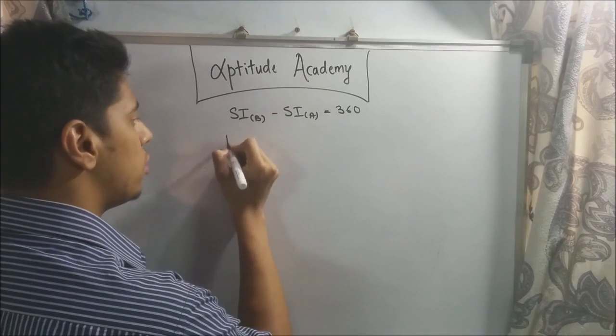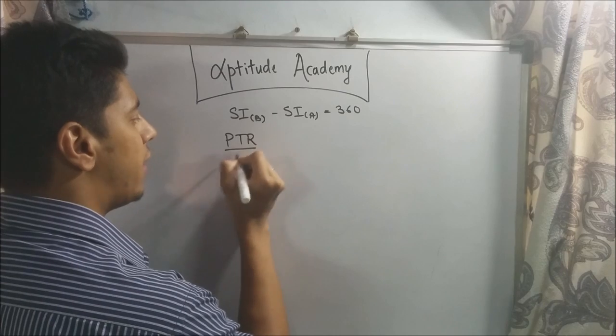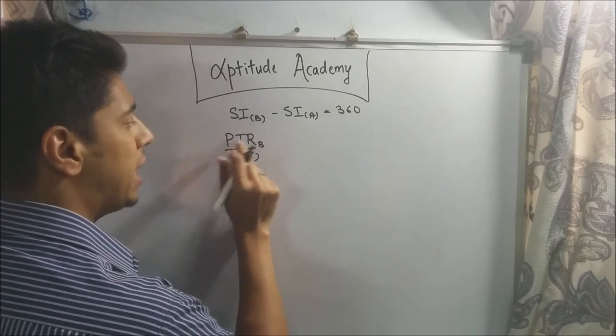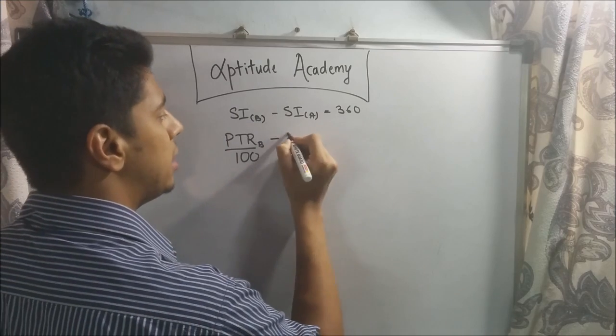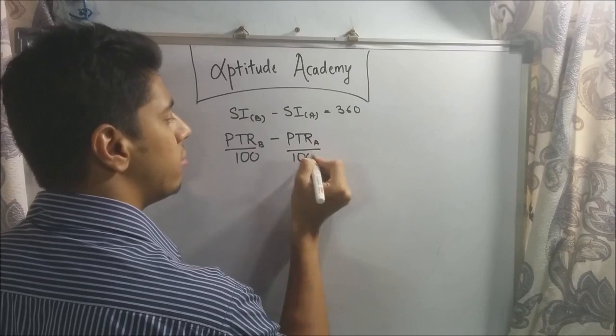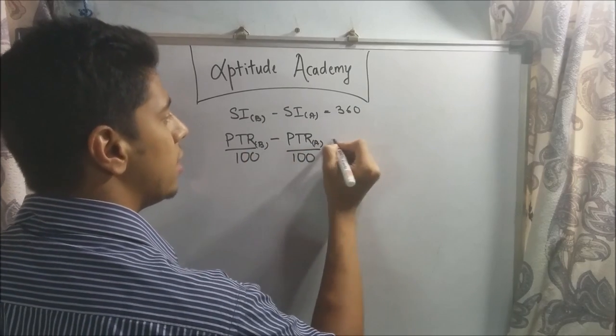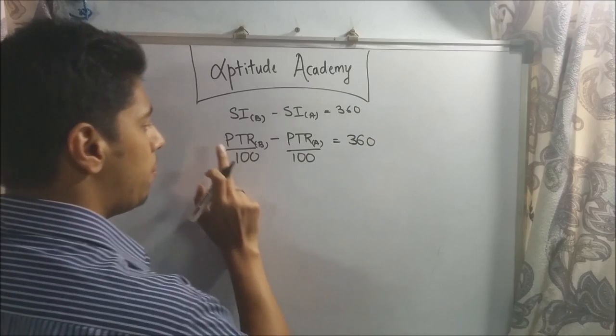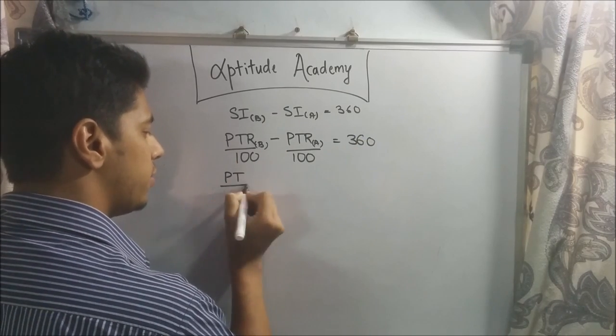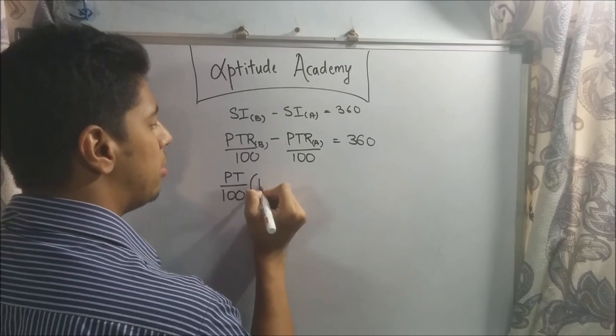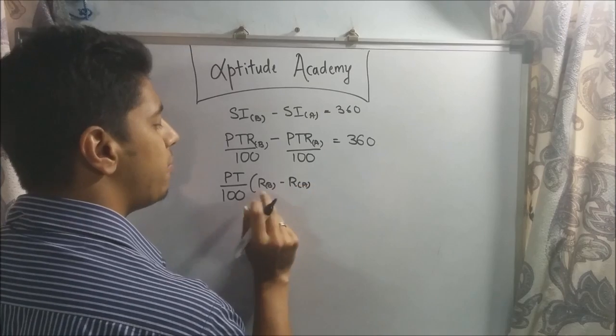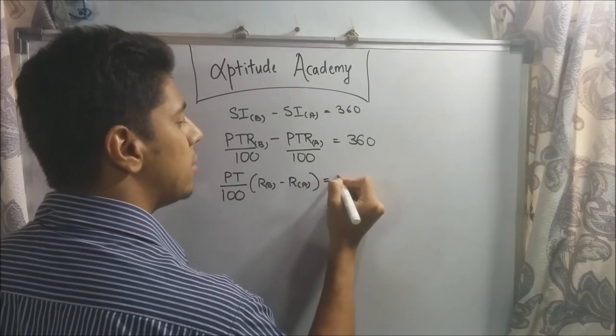So now, this is for bank B. So what is SI? Equal to PTR divided by 100. But since it's bank B, the rate will be different. P and T was the same. Similarly, this will be PTR A over 100. You can put the little brackets here, equals 360. Now, PT by 100 is common. You can take it outside. So taking PT by 100 common, we'll be left with RB minus RA. Rate of bank B minus rate of bank A equals 360.